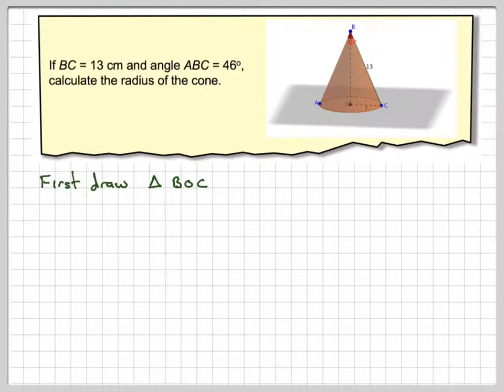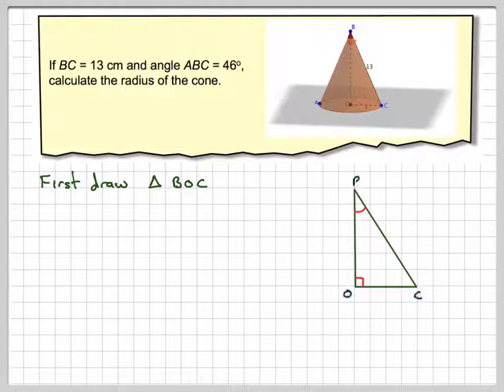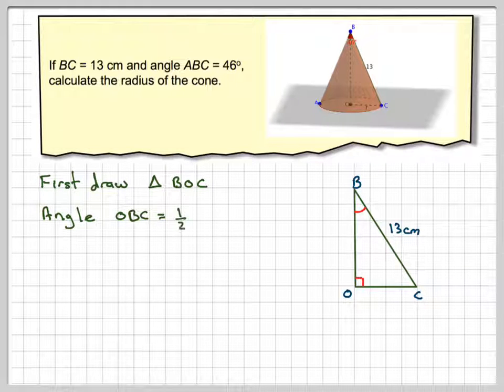Okay. So drawing that out. It's right-angled, then marking on the length we want. We know that this angle here is a half of 46. It's going to be half of this angle at the top here, which is going to be equal to 23.